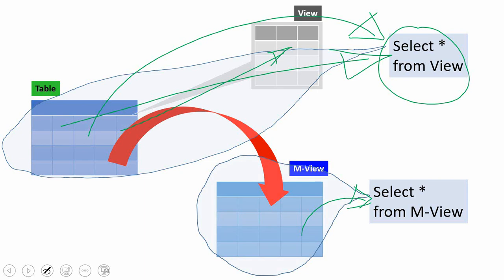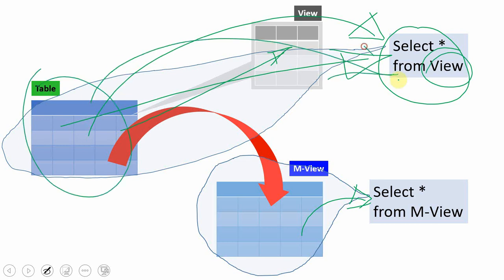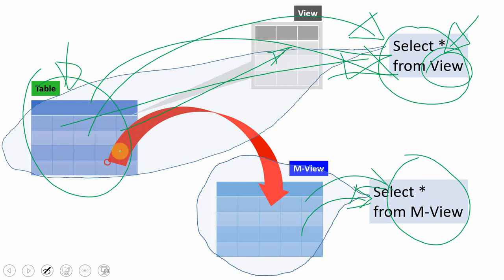So in this case, if you have created a view and a materialized view and you are selecting from the view, any changes that happen to the table will automatically and immediately reflect to that view. Because at any point of time when you select information from a view, it automatically executes the underlying select statement and fetches the information. Whereas in a materialized view, since it uses local data, any changes that happen to the table will not reflect to the materialized view immediately.